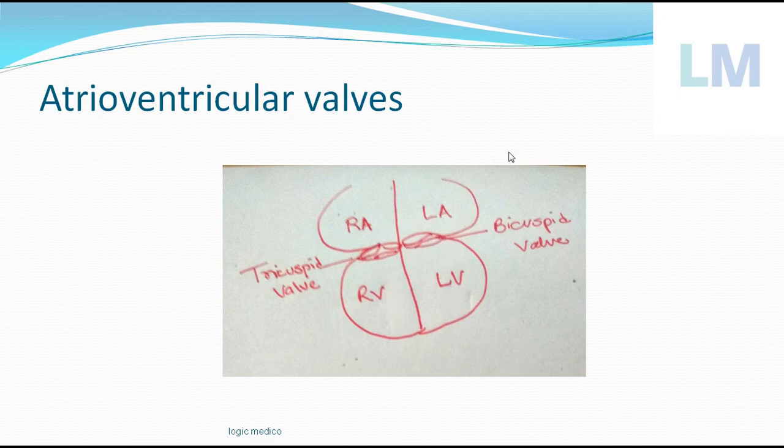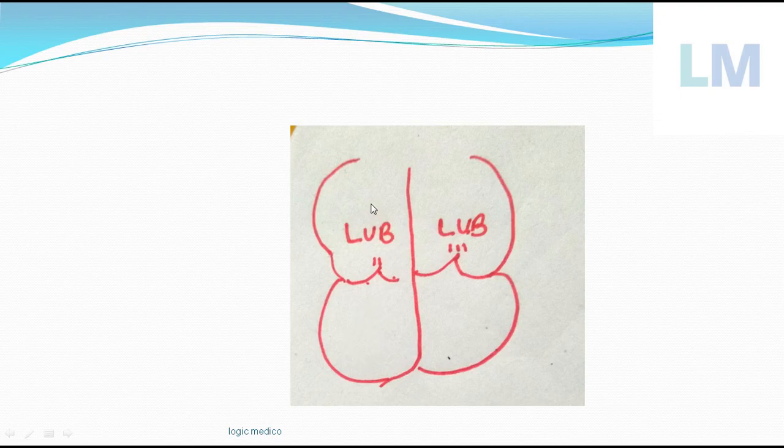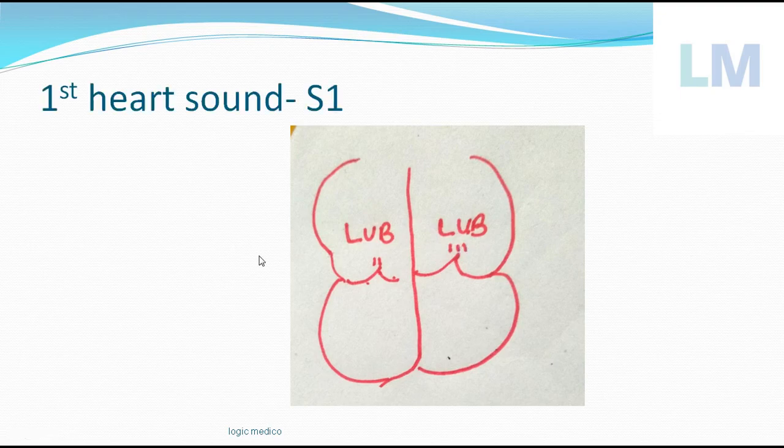Whenever you open a door and close it with force, what produces the sound - opening or closure? The closure produces more sound. The closure of these AV valves produces one sound called 'lub'. After the ventricles get filled up, the pressure in the ventricles is higher than that of the atria, and both the tricuspid valve on the right and bicuspid valve on the left close together, producing one sound called 'lub'.